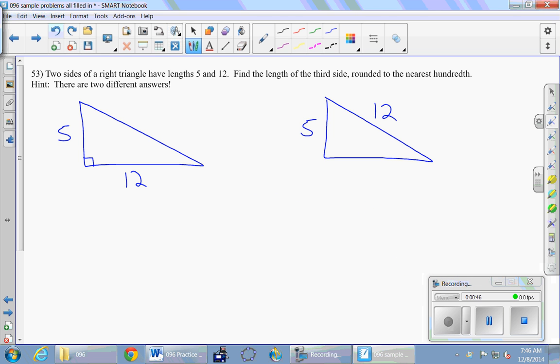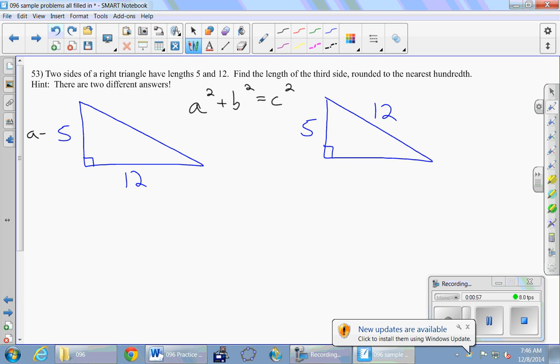We know the most famous theorem in math is the Pythagorean theorem, and that's the one we're going to apply here. a squared plus b squared equals c squared, where a and b are the two legs, that is the two shorter sides, and c is the length of the hypotenuse, the longer side.